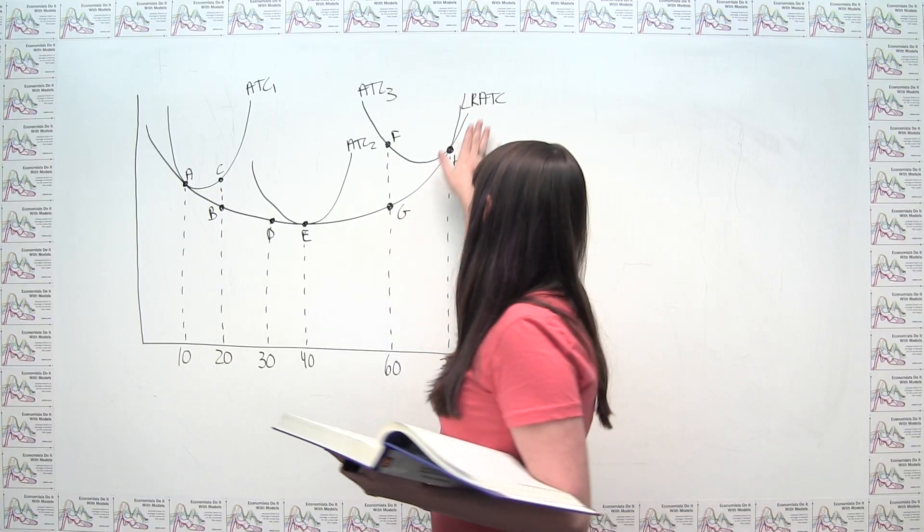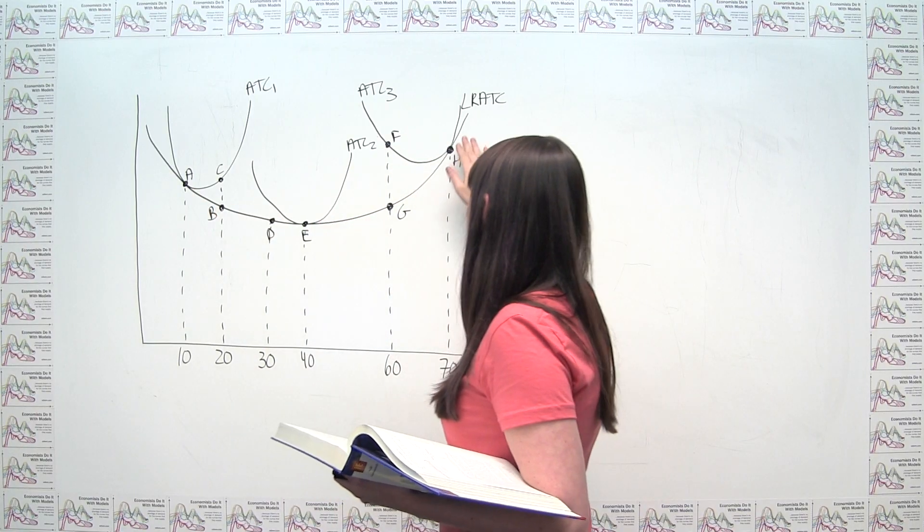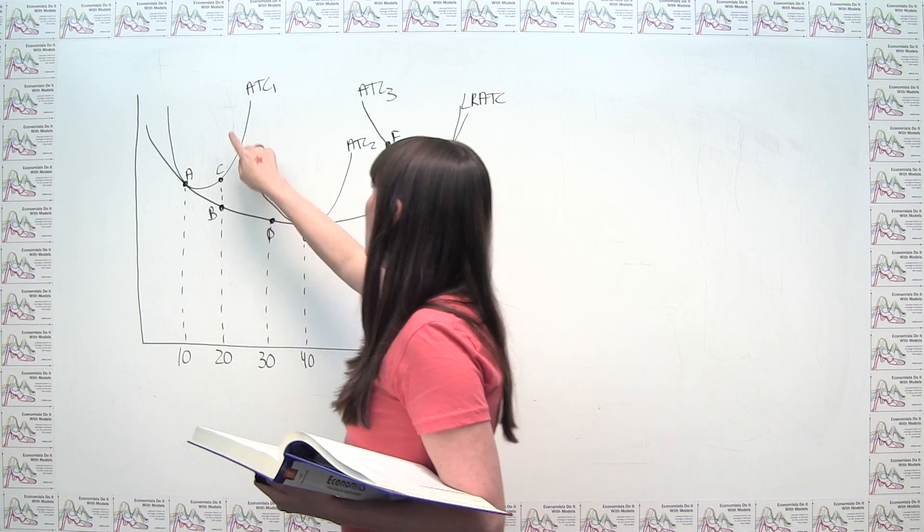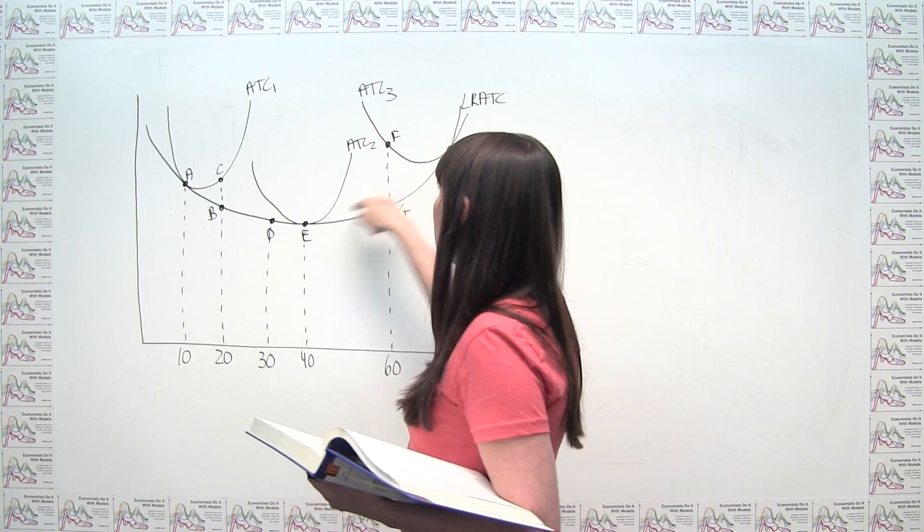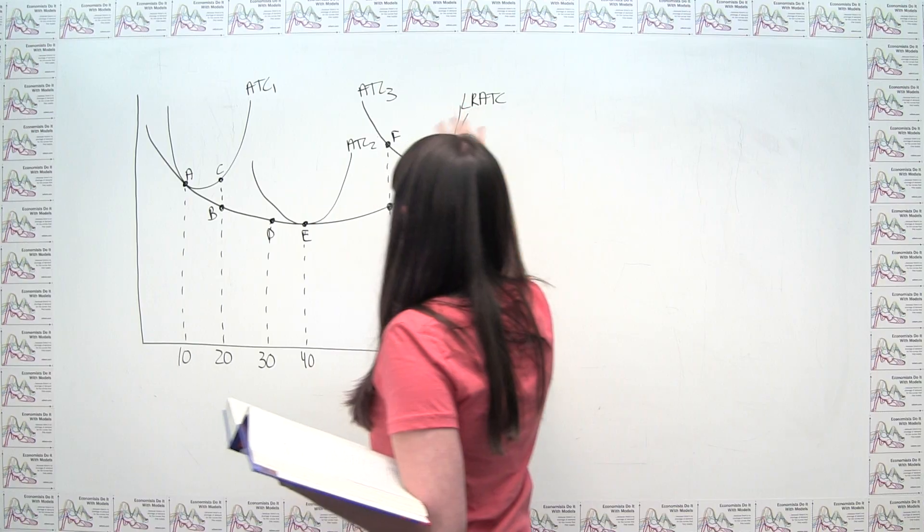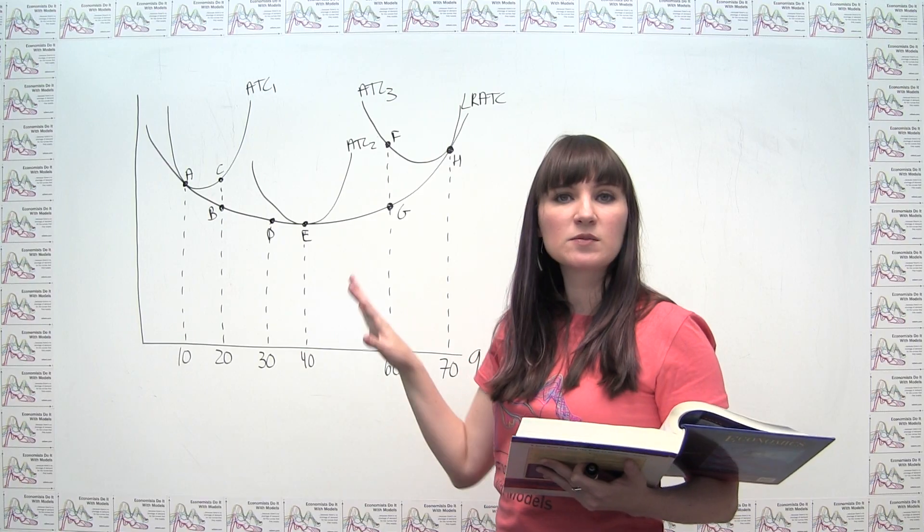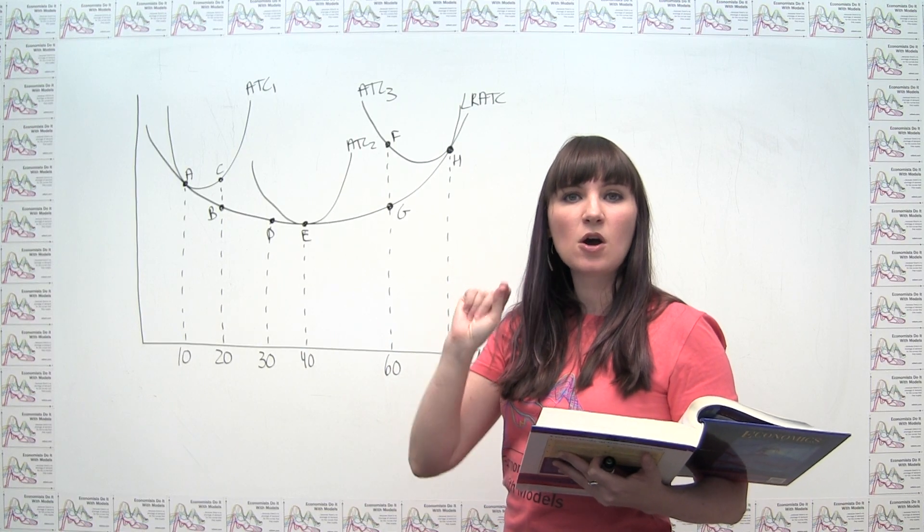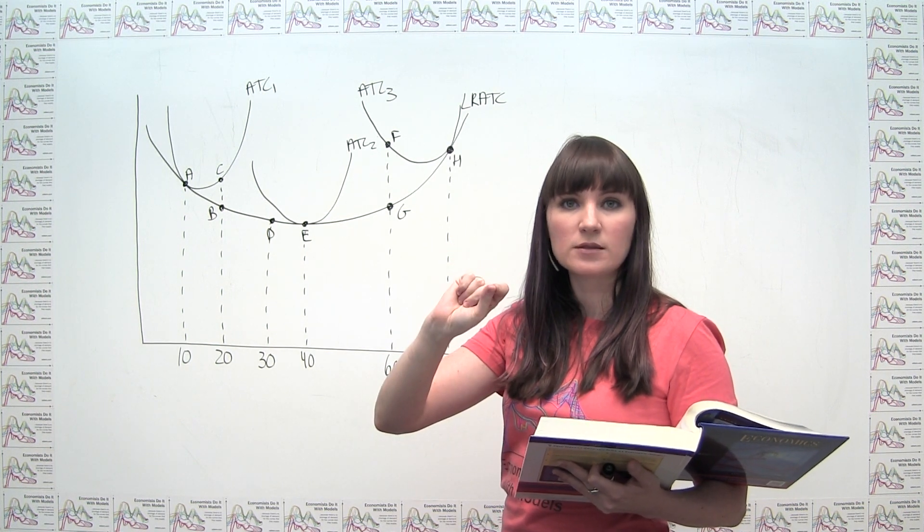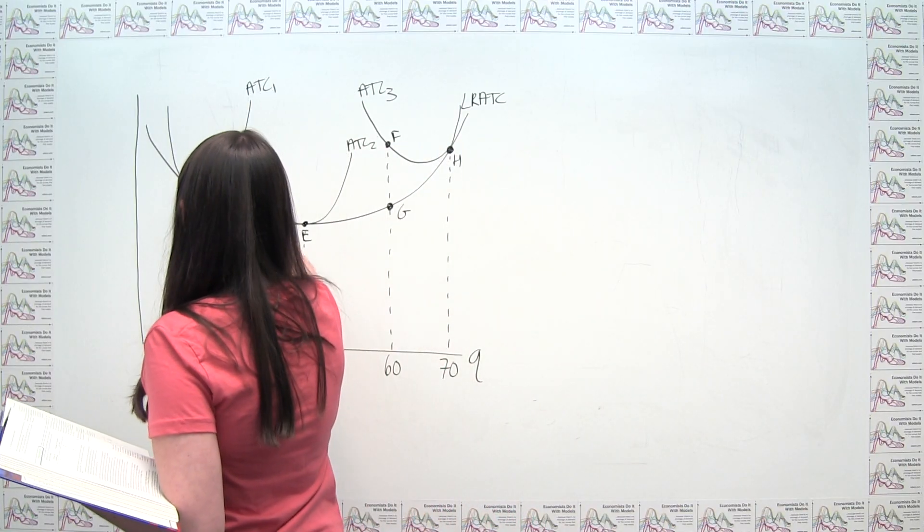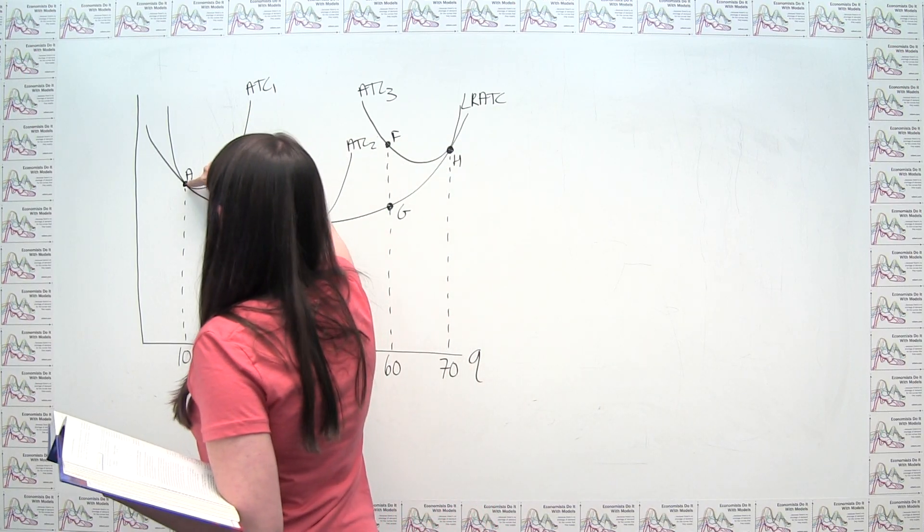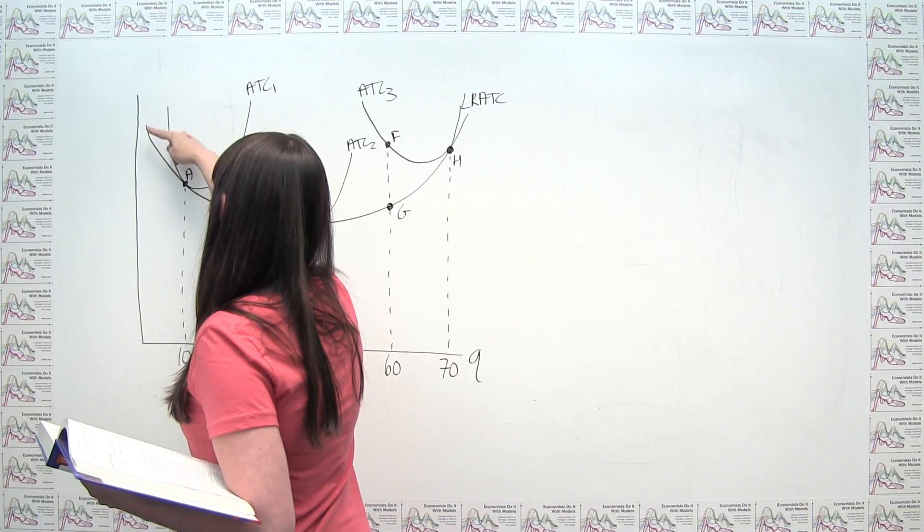So basically what we're saying here, a really simple way to think about it, is the long run average total cost curve at each quantity is saying, of all the different plant size curves we could be on, and you notice we would have more than just three options, we'd have a whole bunch of these different U's. Of all the possible plant sizes, which is the least cost way of producing this quantity. Okay, let's take that cost and make it our long run cost. So for example, here, assuming that we didn't have an average total cost curve that was lower than this one at point A, then this point's going to be on our long run average cost.